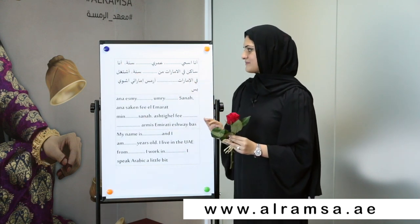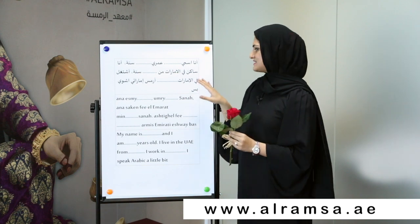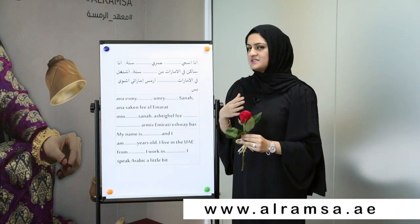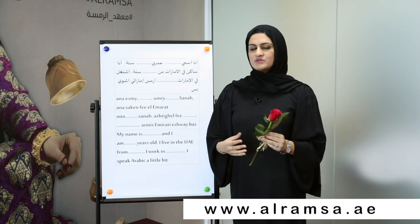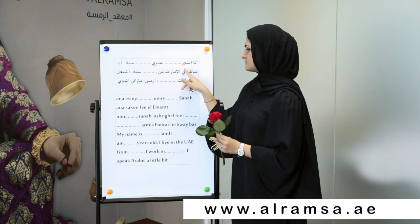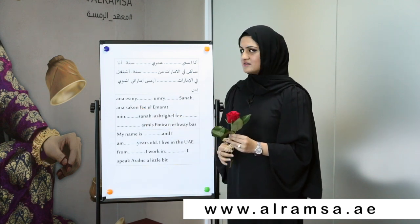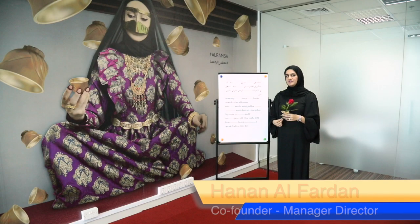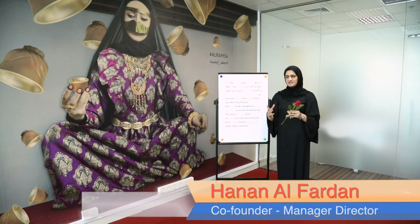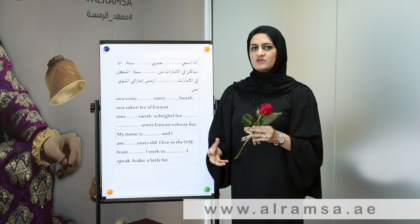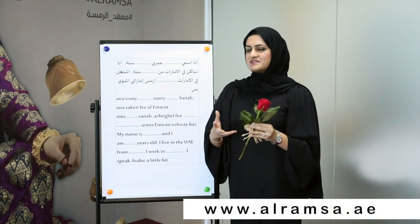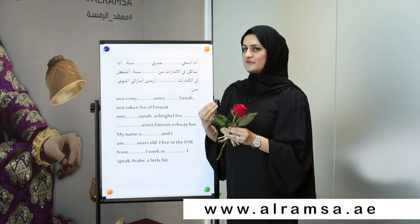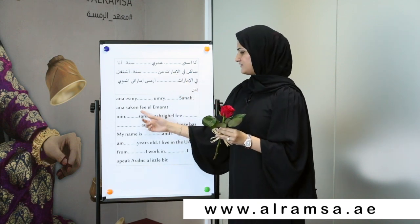أنا ساكن في الإمارات — أنا means I am again, ساكن means I live or I'm living. This is an adjective; here it is only for male. But since I am a female, I would say أنا ساكنة — you need to end it with taa marbuta, or 'a' at the end, so it becomes ساكنة. أنا ساكنة في دبي, في الإمارات, في لندن, في أمريكا — just say the name of the city or country you are in. Most probably you would say أنا ساكنة في الإمارات.